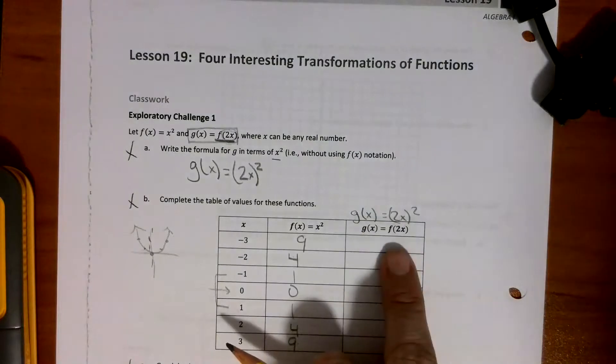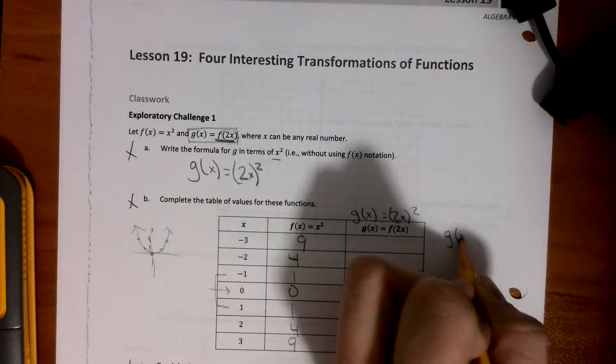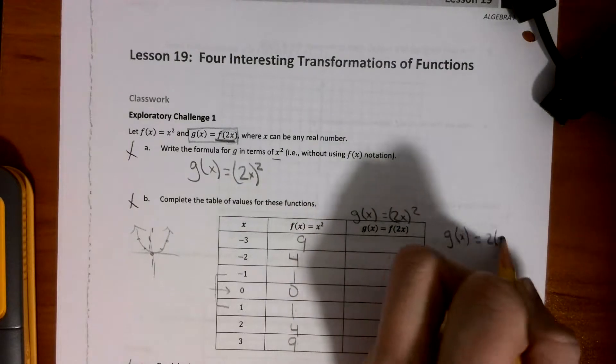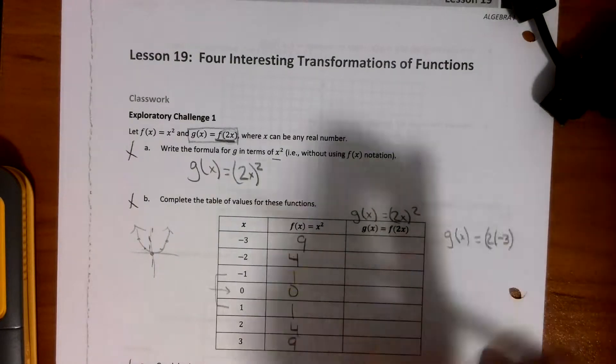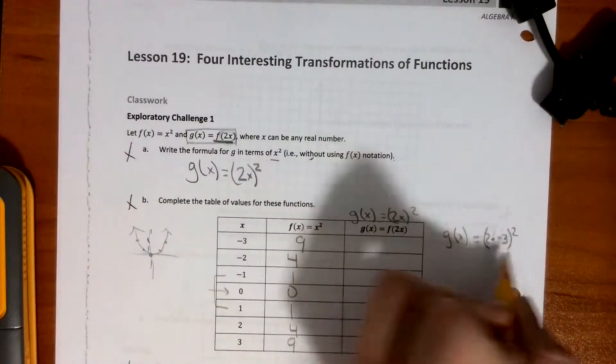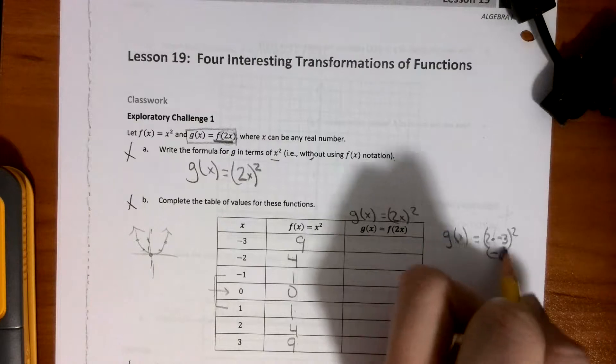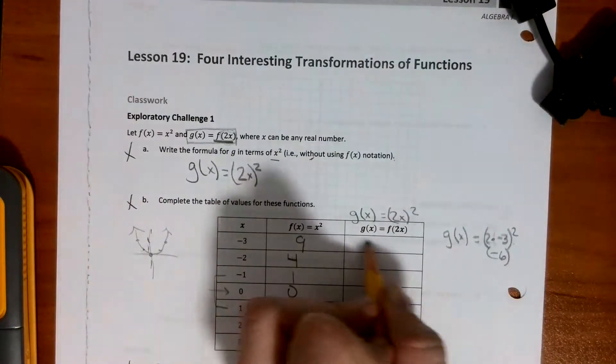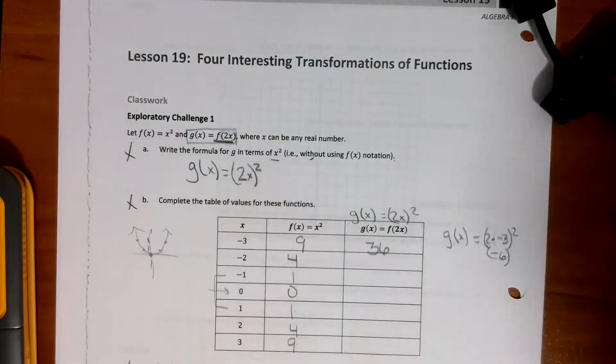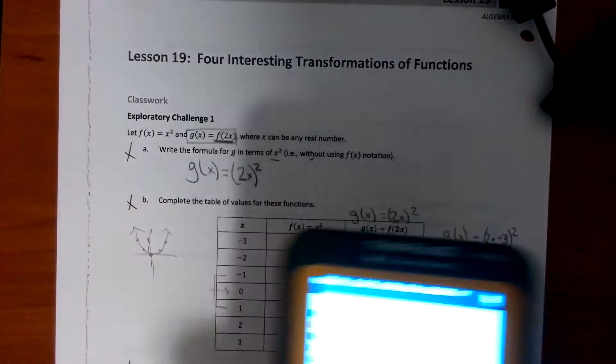So then we put that here. We put our negative 3. So really, we're thinking g of x equals 2 times the negative 3 or 2 times the negative 3. We can get rid of that center parenthesis. Let's put a little times sign. Second power. So negative 3 times 2 is a negative 6, and a negative 6 squared would be 36. However, we can put this right into our calculators. So if we get into our y functions graph, okay, and I'll put it up here so you guys can see it.